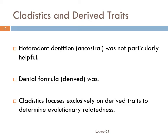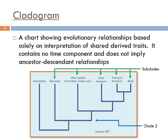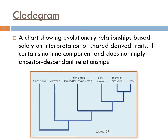The end result of cladistic analysis is a taxonomy — a series of hierarchically arranged categories that consistently reflect evolutionary relationships. Strictly speaking, the statistical processes used to create those categories produce a cladogram: a chart showing evolutionary relationships based solely on interpretation of shared derived traits. It contains no time component and does not imply ancestor-descendant relationships. On a cladogram, each horizontal line represents a clade. The vertical lines that branch off of the same horizontal line all represent groups that belong to that clade. The lower the horizontal line is on the chart, the more vertical lines branch off of it, so the bigger the clade. Cladograms do not indicate which species are ancestral to which others — they just show how closely related species are to one another.